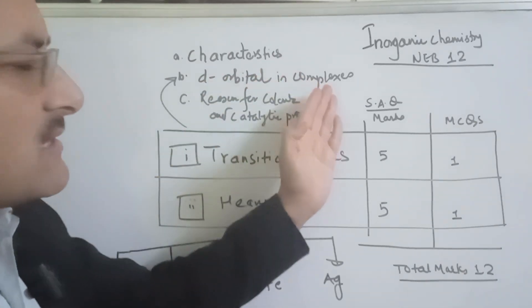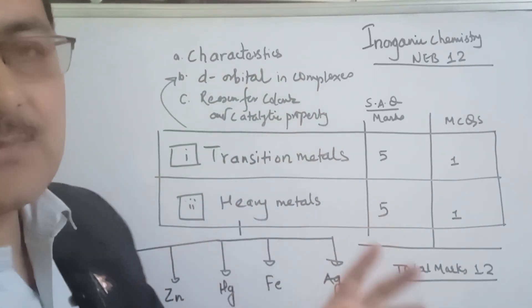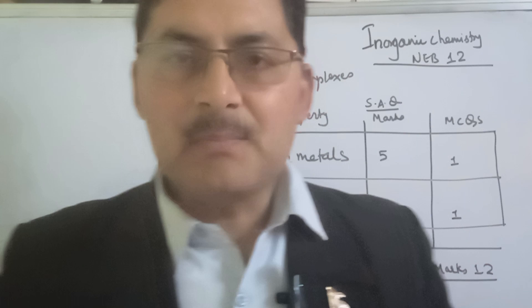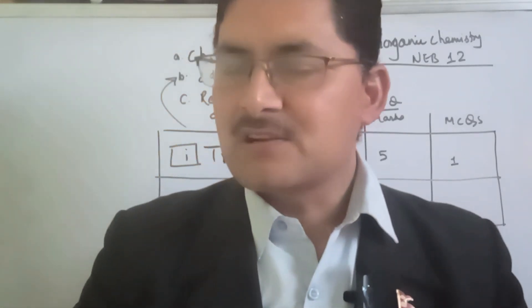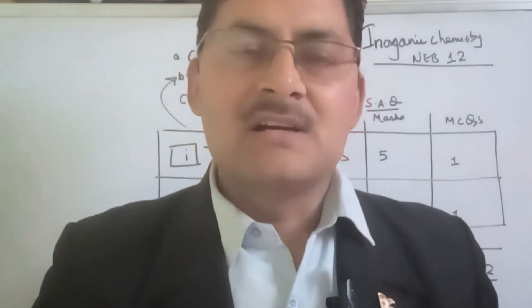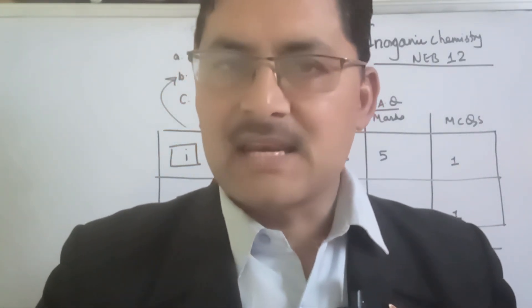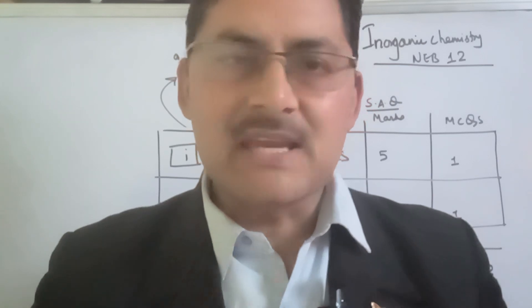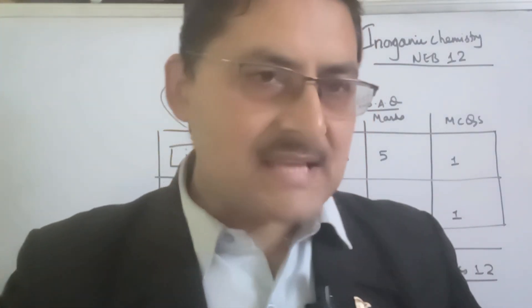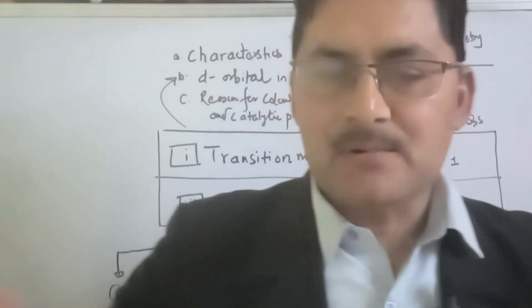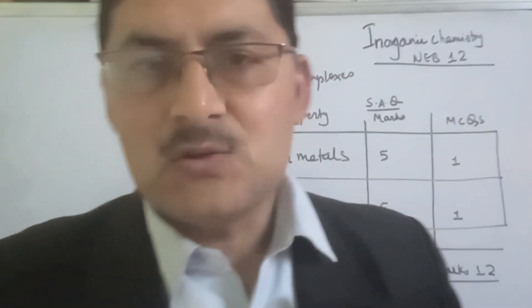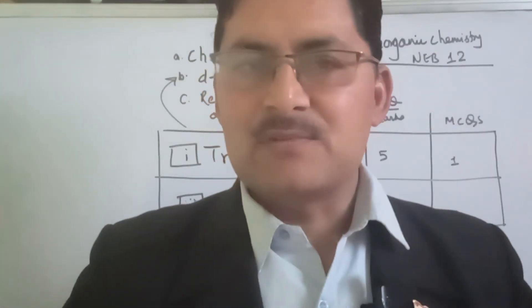D-orbital splitting in complex compounds is an important concept. Transition metals form complex compounds. What is a complex compound? What is a complex? What is D-orbital splitting in a complex?